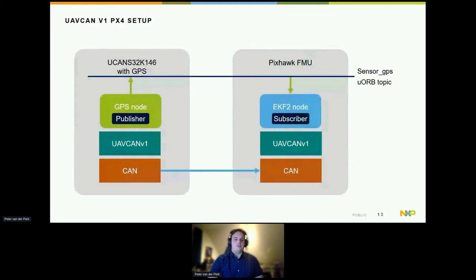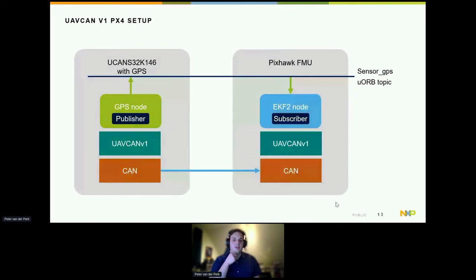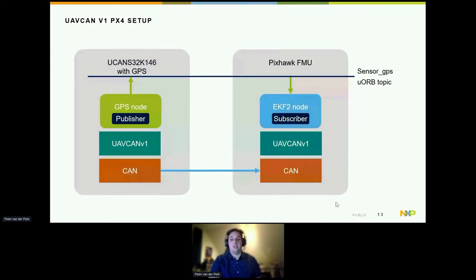On the left, we have a CAN node running UAV CAN v1 with a GPS. We publish the GPS data using the internal sensor GPS message from PX4. From the FMU side, it just receives the sensor GPS message as an extra topic, giving it an extra GPS source which it can use for the EKF2 state estimator.